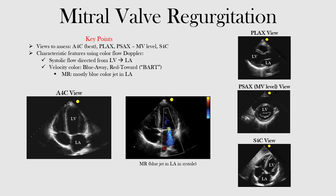The best views — if you recall from mitral stenosis — included the parasternal long axis view, where we could assess for calcification, thickening, or doming of the anterior leaflet. For mitral regurgitation, the apical four-chamber view is a great one. Here we can see all four chambers: the left atrium, left ventricle, right atrium, and right ventricle. Our focus is the left side, because the mitral valve sits between the left atrium and left ventricle.